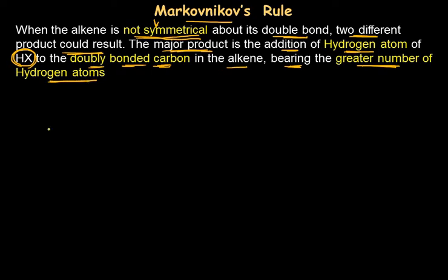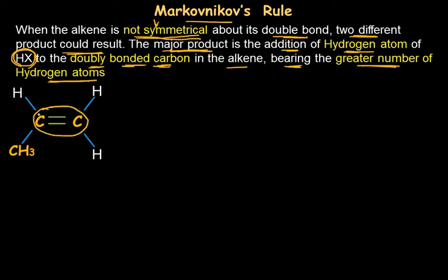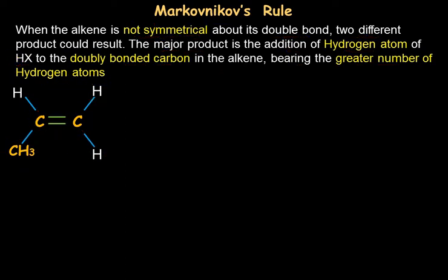Let's understand this with an example. Propene is unsymmetrical around its C=C. One carbon carries a methyl group on one side, while the other carbon carries only hydrogen atoms — so this alkene is not symmetrical around its C=C. Suppose this unsymmetrical alkene reacts with hydrogen bromide. Hydrogen carries partial positive charge and bromine carries partial negative charge.